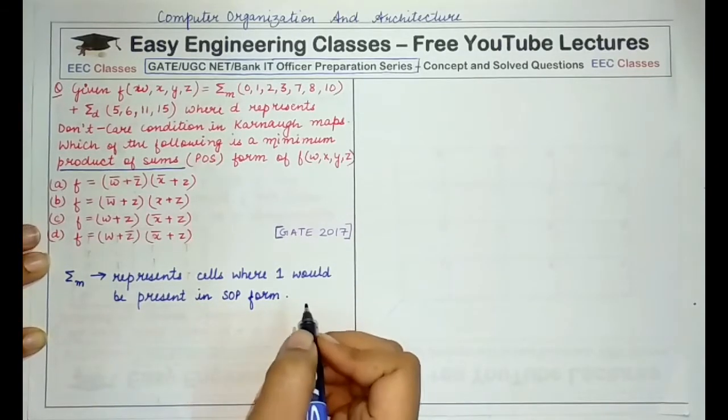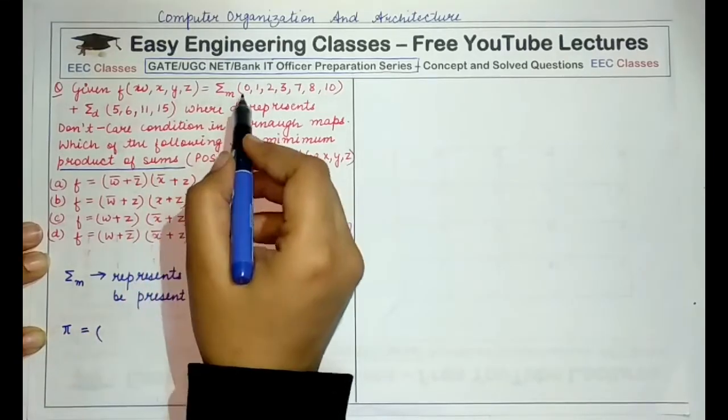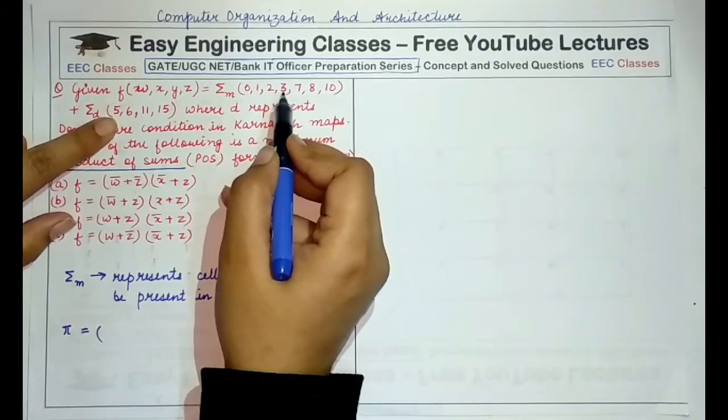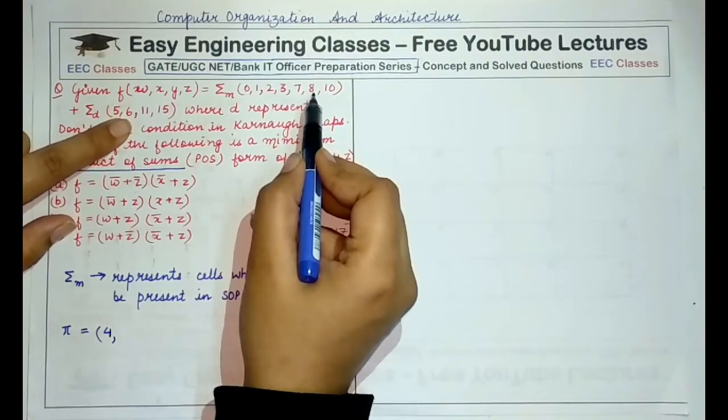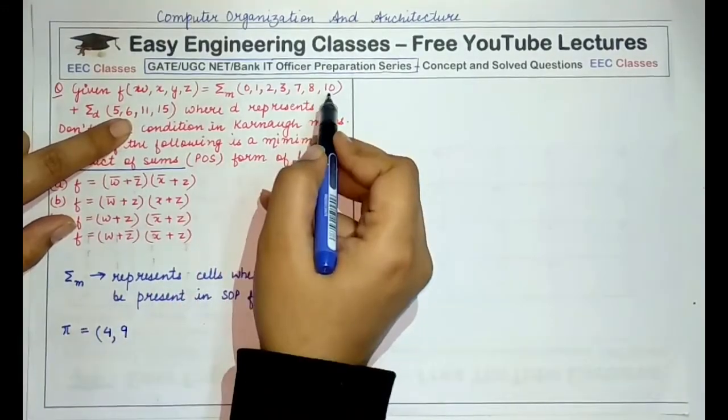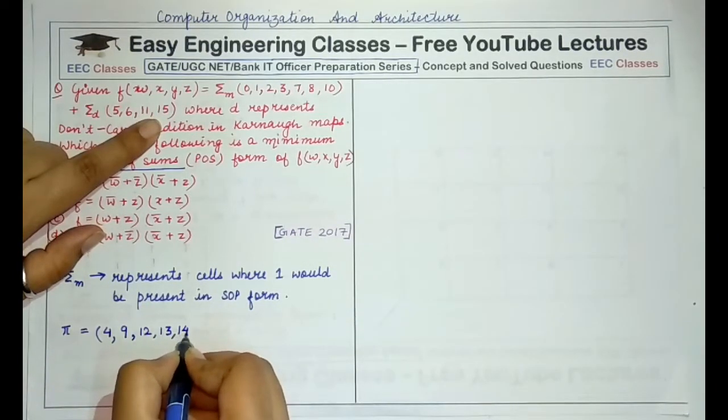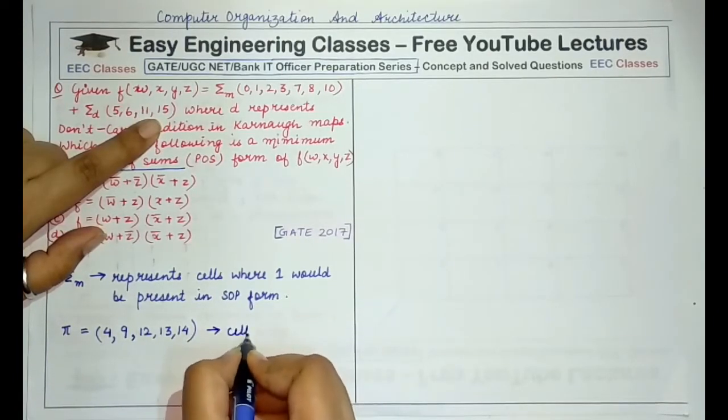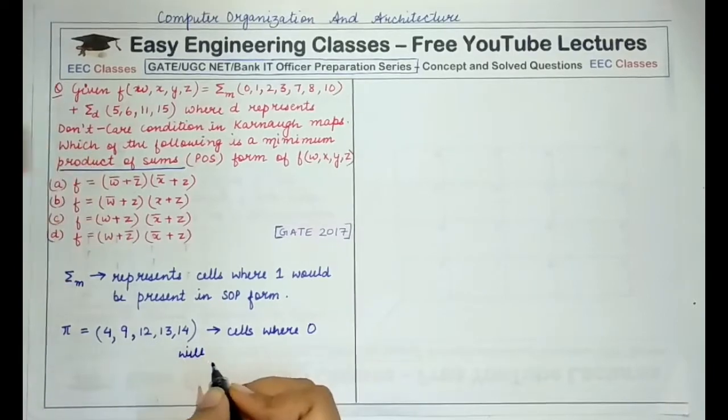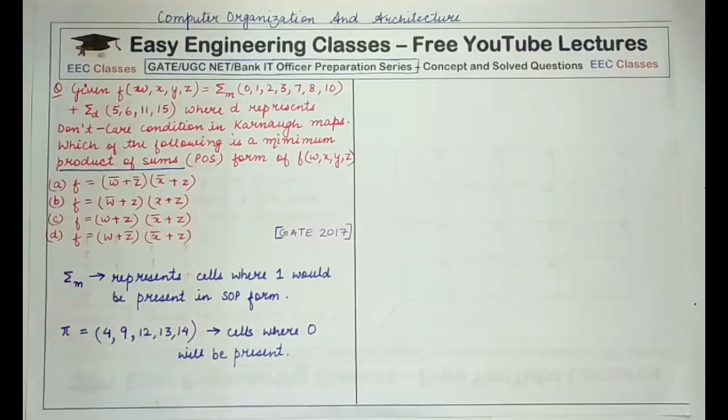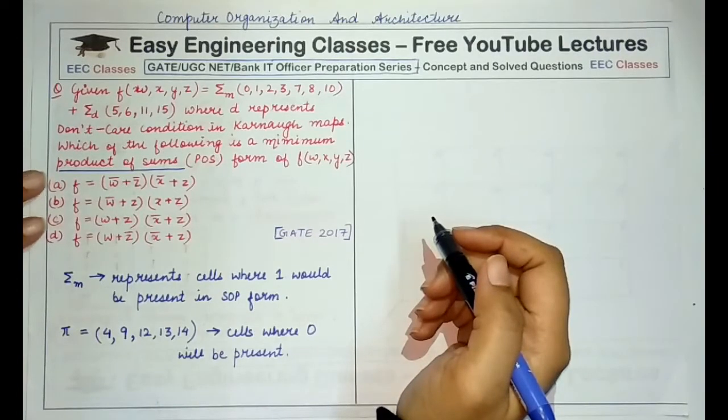So if we have to find out the terms where 0 would be present, since 0, 1, 2, 3, then 7, 8, 10 are present in sigma, and 5, 6, 11 are present in don't care, the cells where 0 would be present are 4, 9, 12, 13, and 14 for product of sum form. These are the places where 0 would be present, and now let's draw the Karnaugh map and solve the question to find the minimum product of sum form.